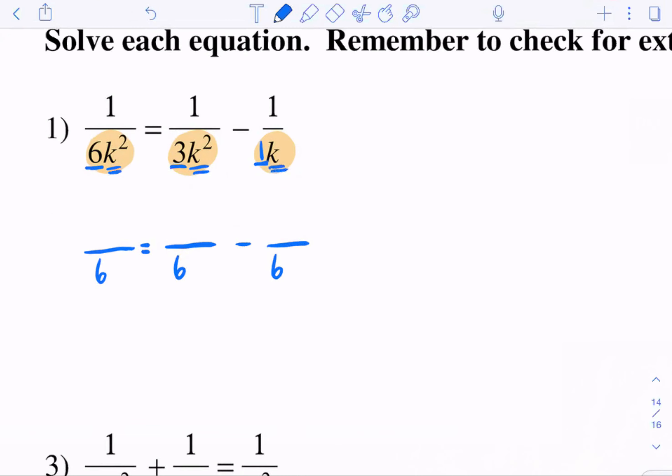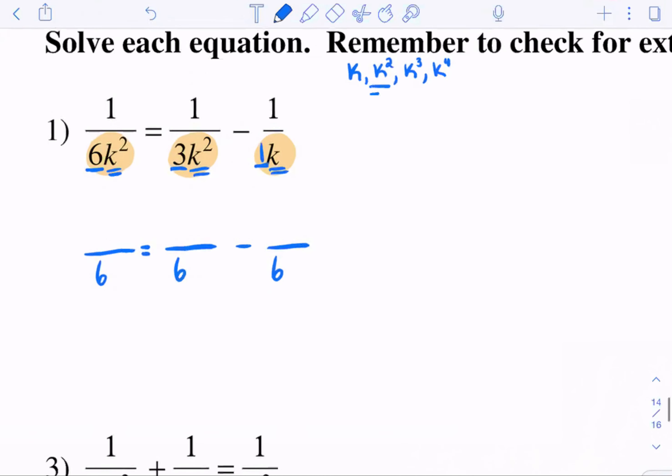Then the common multiple between a K squared, a K squared, and a K. If I were to write K, then K times K, that's K squared. Then K times K times K, that's K cubed. Then K times K times K times K, that's K to the fourth. The one that I can get all of them to equal to is the K squared.